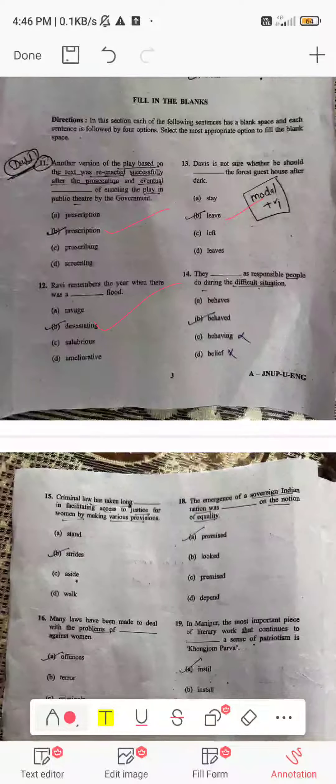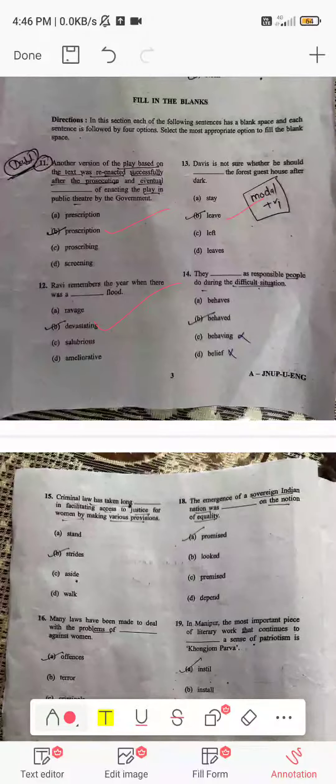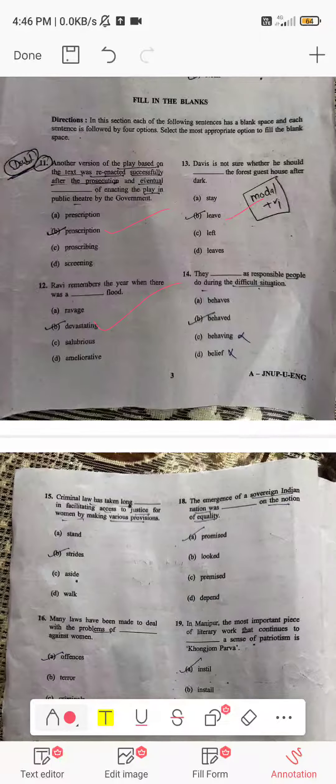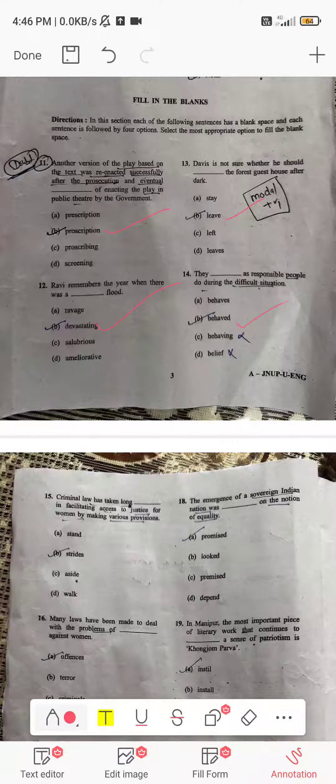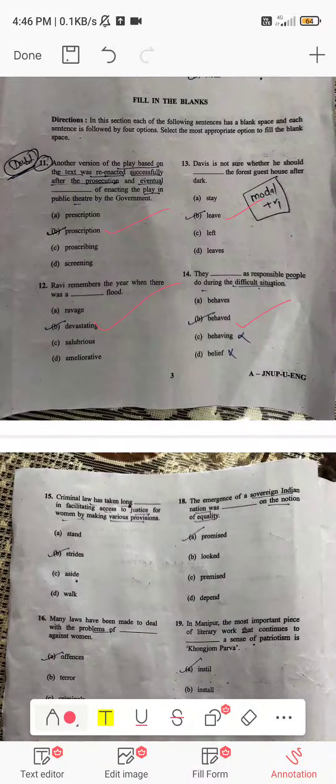Next, Ravi remembers the year. Okay, it's over. Sorry. They dashed as responsible people. So during the difficult situation, they behaved as responsible people during the difficult situation.